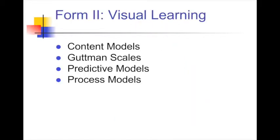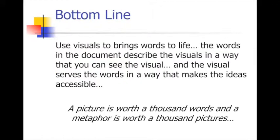You can break visual models down into four areas: content models, Guttman skills models, predictive models, and process models - plus a few others like instructive models. The bottom line is you want to use visuals to bring words to life. The words describe the visuals, and the visual serves the words in a way that makes ideas accessible. A lot of times people create a visual and drop it in without really connecting the words to the model. You want to cue people in your writing to the visual - tell them to see Figure 1 - and then describe it.